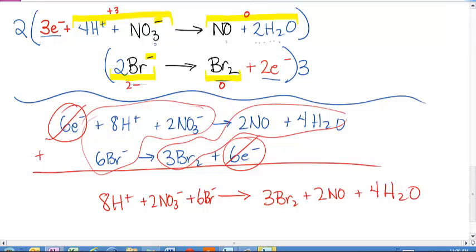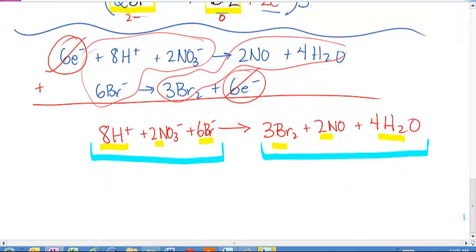The last step is to check the atoms and charge. So, literally, I have 8 hydrogens, 8 hydrogens. I've got 2 nitrogens, 2 nitrogens, 6 bromine, 6 bromine, and 6 oxygens. So, it checks. That's the atoms. The charge is this. What is the overall charge on this side? Here I've got 8 positives. Here I've got 2 negatives. And here I've got 6 negatives. If I add that up, I get 0. On this side, it's 0 plus 0 plus 0. They check. I'm done. It's balanced. We're good.